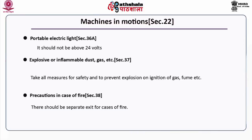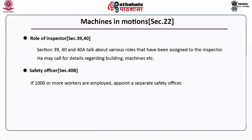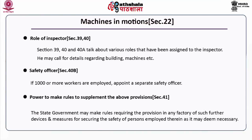Precautions in case of fire under Section 38: there should be separate exits for cases of fire and facilities for extinguishing fire. Sections 39, 40 and 40A discuss the role of the inspector, who may call for details regarding buildings, machines, etc. Under Section 40B, safety officer: if 1,000 or more workers are employed, a separate safety officer must be appointed. Section 41 gives the state government power to make rules requiring the provisions of such devices and measures for securing the safety of persons employed in factories as it may deem necessary.